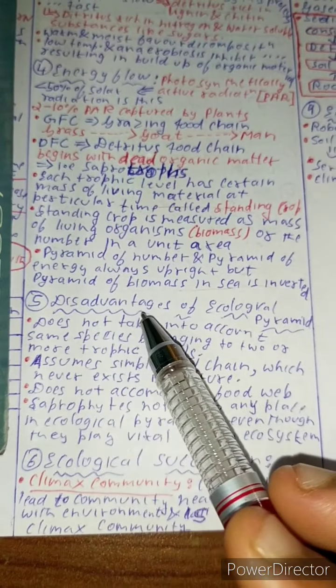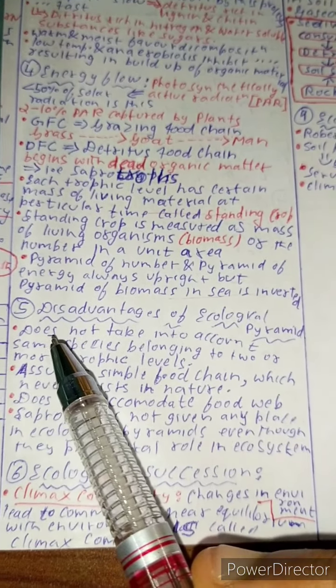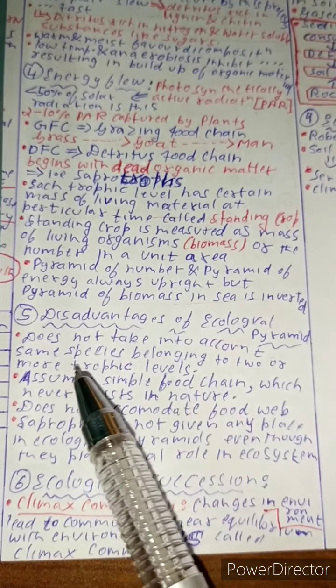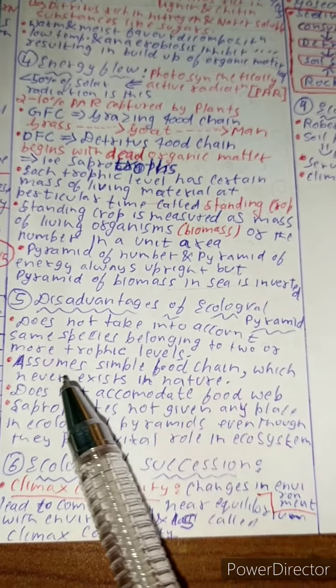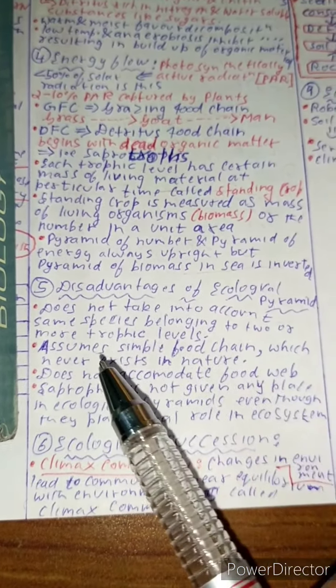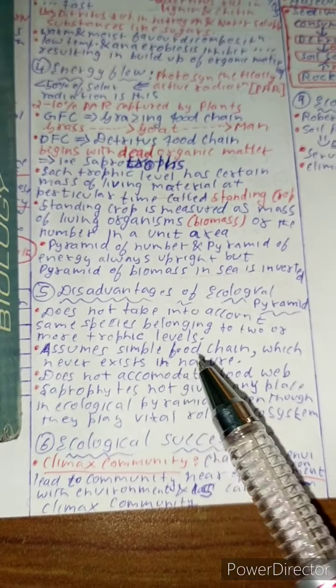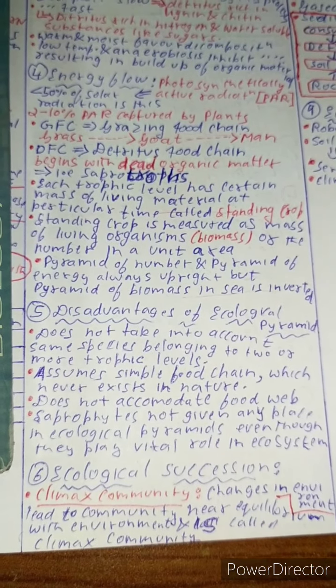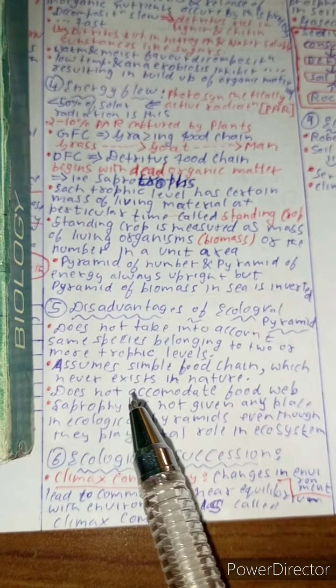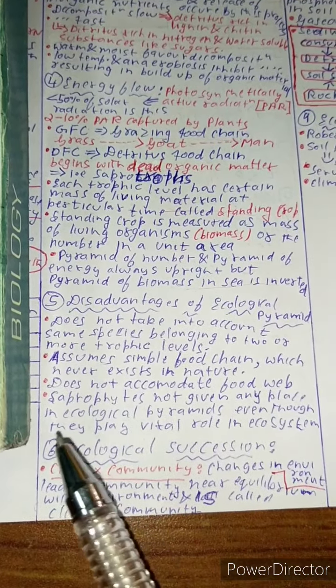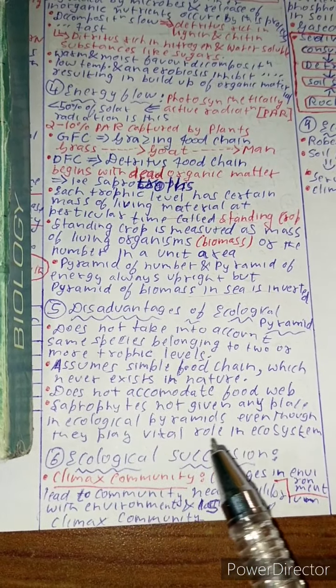Now let us see what are the disadvantages of ecological pyramid. First of all, it does not take into account some species belonging to two or more trophic levels. It assumes simple food chain which never exists in nature. Actually in nature, simple food chain never exists - it exists as food web that is given over here. It does not accommodate for food web. Saprophytes are not given any place in ecological pyramids even though they play vital role in ecosystem.